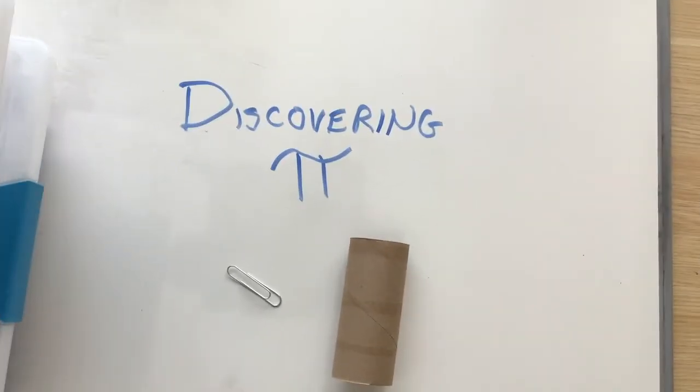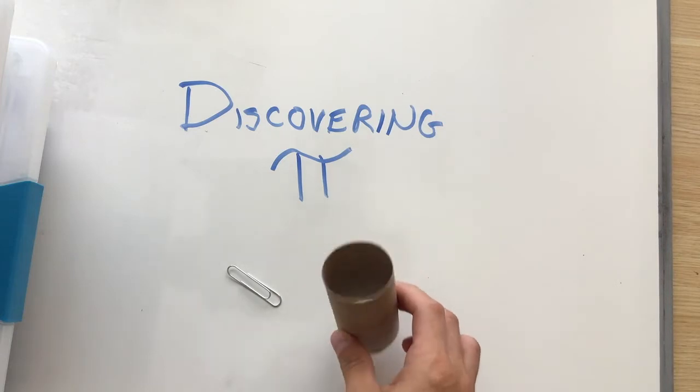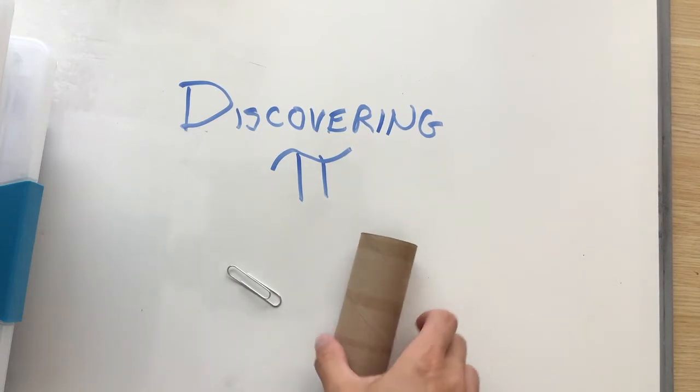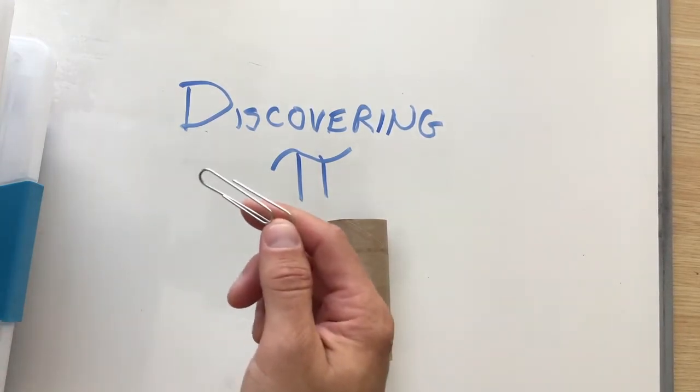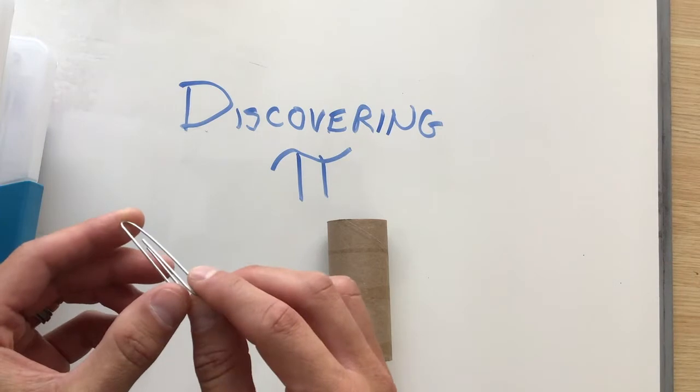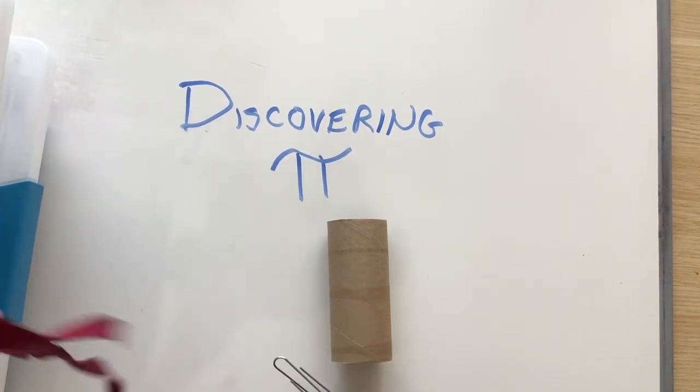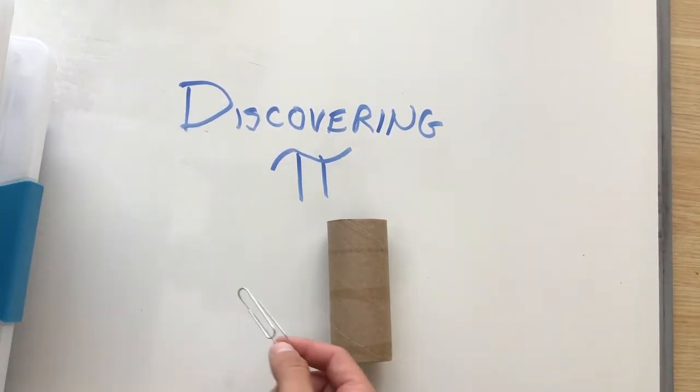Today we're going to do a quick experiment to discover pi. And to do that, you can follow along at home. You can find a paper towel roll or a used toilet paper roll, and I was able to find a large paper clip. If you can't find that, you can substitute it by using some string or even a ruler.